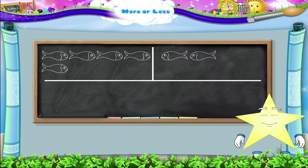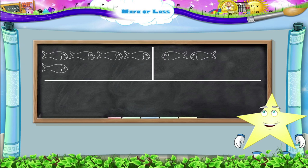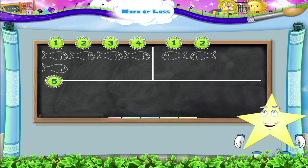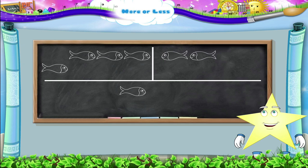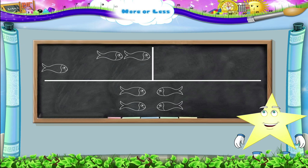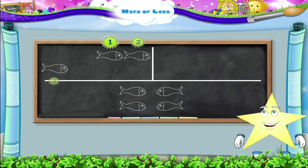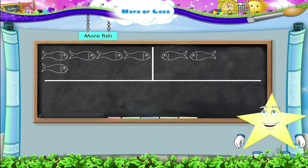Starry, there is another way to find out the difference between more and less. Look at this board. On this side, there are one, two, three, four, five fish. On the other side, there are one, two fish. Now let's form one-to-one pairs. One fish to one fish, the second fish to the next fish. Now we still have three unpaired fish on this side. So we say more fish and less fish.